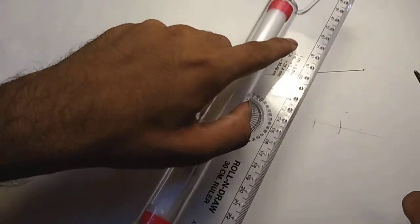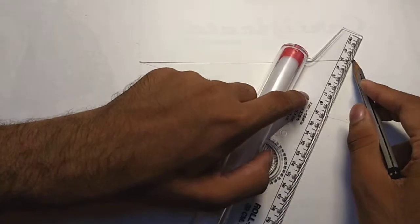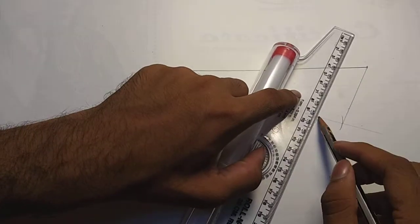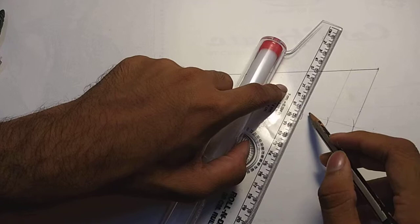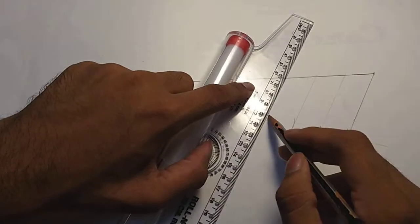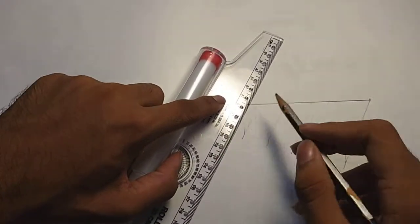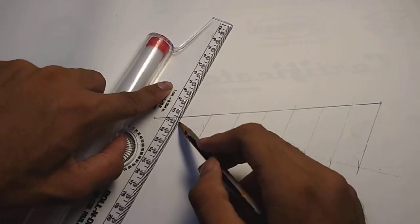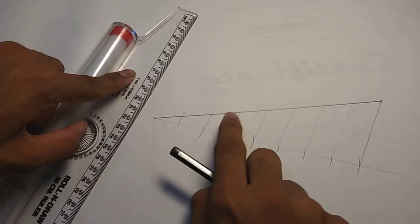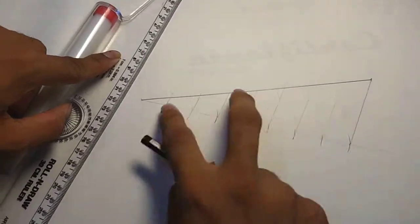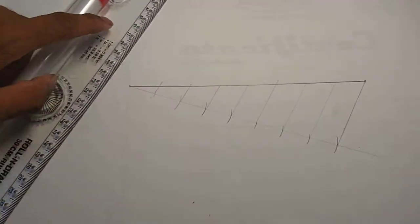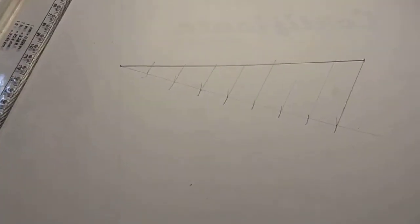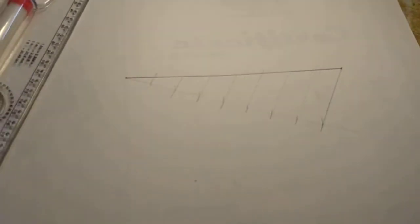You need to use the ruler scale for this. Similarly, keep on moving and draw like this. Your line gets divided into eight equal parts: one, two, three, four, five, six, seven, eight. This is how you divide your line into eight equal parts.